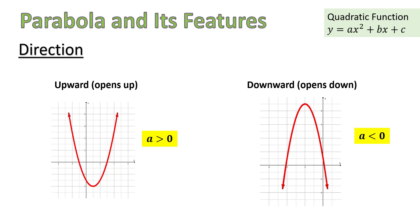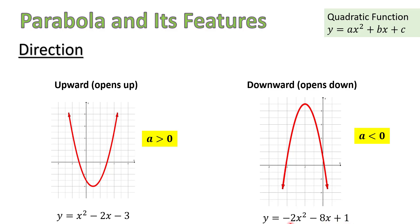Now to illustrate this with examples, let me add the quadratic functions that correspond to these two graphs. The function for the first graph is y equals x squared minus 2x minus 3. What is the value of a in this function? It's the coefficient of x squared, but there is no number in front of x squared. You probably remember that if there is no number in front of the variable, the coefficient is 1. So a is positive 1, and the parabola opens up. The second example: the function is y equals negative 2x squared minus 8x plus 1. What is a? It's negative 2. So the coefficient of x squared is negative, and as we can see, the parabola opens down.